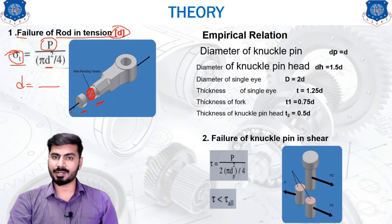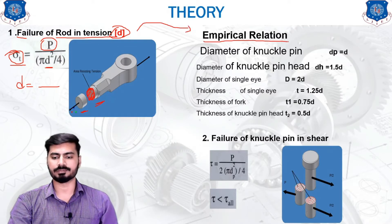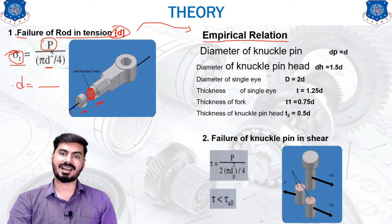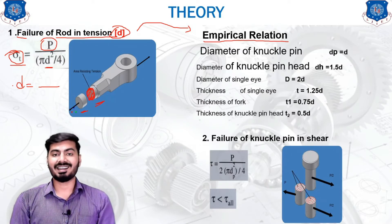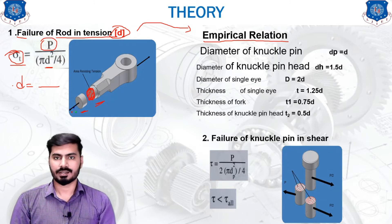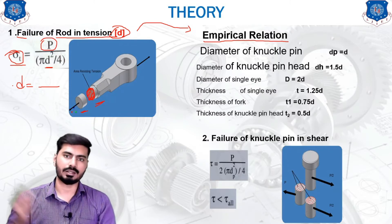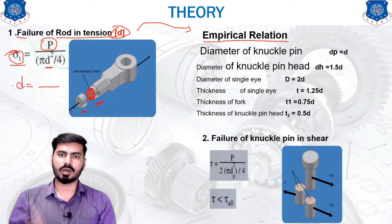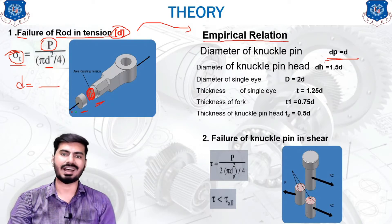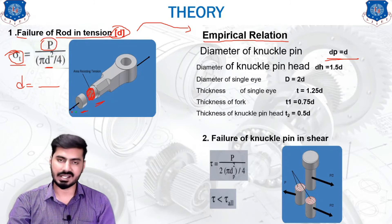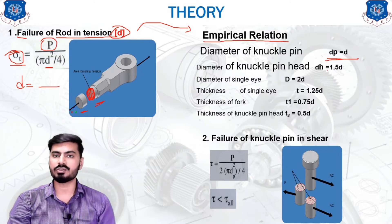After calculation of the diameter of the shaft we jump to the next procedure: the empirical relations. These are one type of assumptions which were carried out based on practical readings. Scientists and designers took a lot of practical readings, came to conclusions, and those conclusions are relations between two dimensions. We are going to calculate the rest of the dimensions using these assumptions.